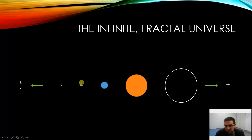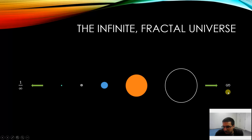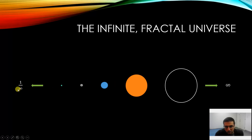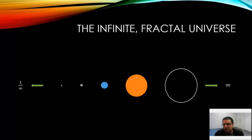The moon orbits the earth, which orbits the sun, which orbits the supermassive black hole at the center of the Milky Way, and from this pattern we can infer that this should continue larger and larger all the way towards infinite. And just the same, let's say this is an atom here — it should grow infinitely smaller towards the infinitesimal. From this structure plus gravity, we can determine how electromagnetism is produced.